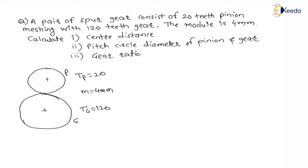Module of pinion is always equal to module of gear for meshing gears. Question number one is to find center distance. The center distance C is nothing but the radius of the pinion plus the radius of the gear.